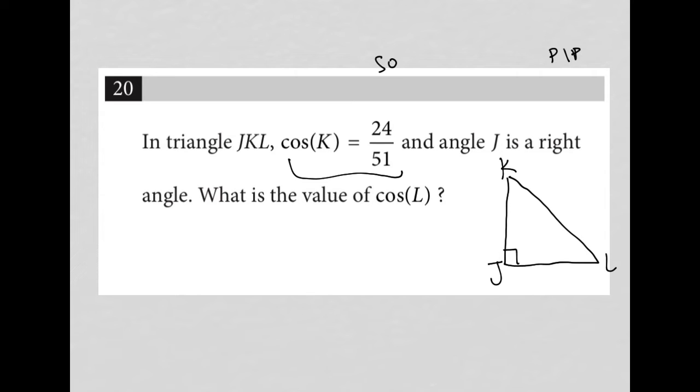I know that I have SOHCAHTOA, and that the cosine is here, where the cosine of an angle, let's call it X, is equal to the adjacent side of that angle over the hypotenuse of the right triangle. So if I'm at angle K, the adjacent side will be here, so that's going to be 24, and the hypotenuse is here, so that's going to be 51.